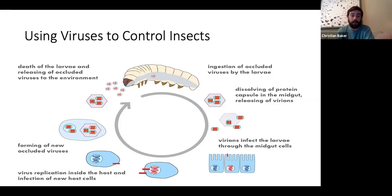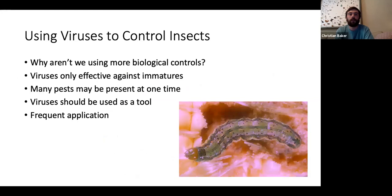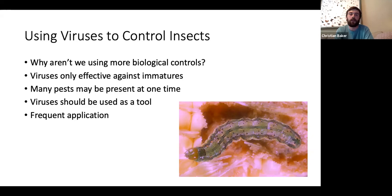This sounds great — we can use viruses instead of insecticides. But just as there are drawbacks to insecticides, there are drawbacks to using viruses. Viruses are only effective against immature caterpillars, so the farmer has to time application precisely just to gain minimal control. Also, many pests may be present at once — not only caterpillars, but true bugs or beetles that can't be controlled by these viruses. Therefore, viruses will be used as a tool in the IPM toolbox in rotation with other insecticides. Additionally, viruses are not very stable in the environment, so the farmer has to frequently reapply them, which is time-consuming, money-intensive, and labor-intensive.